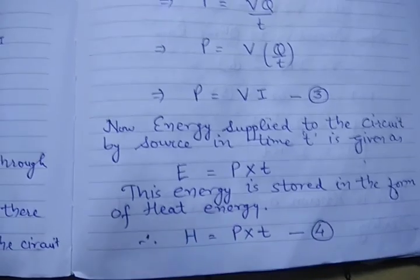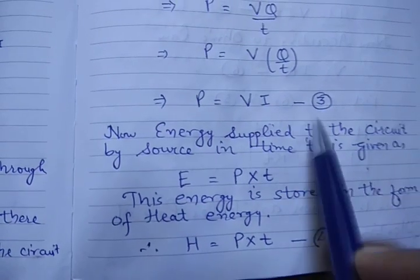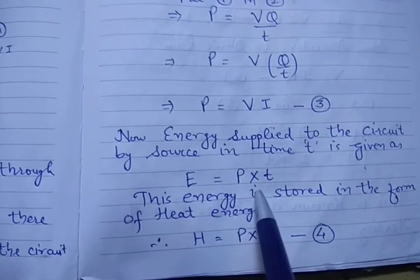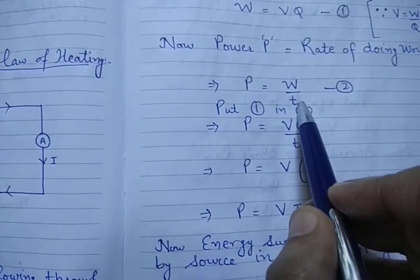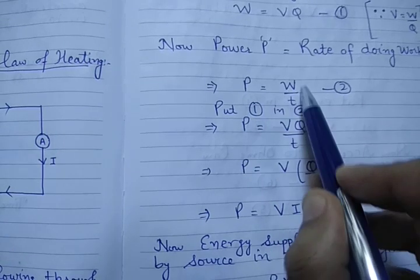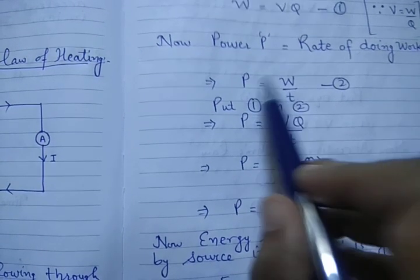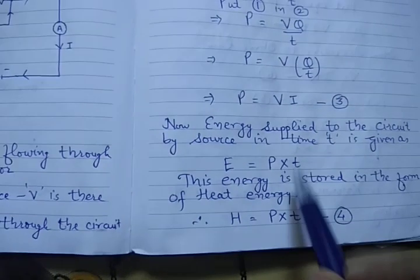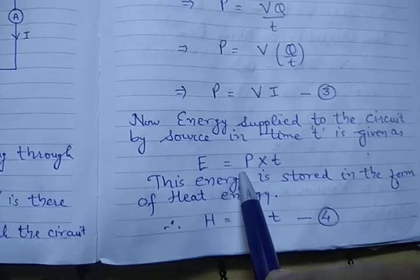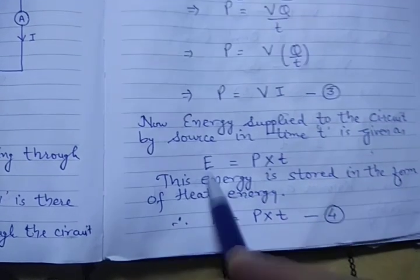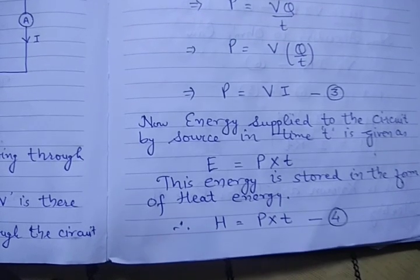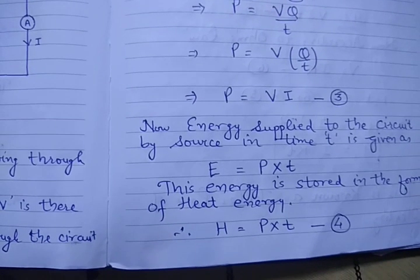Now energy supplied to the circuit by the source in time T is given by E equals power into time. How is this equation there? Because we know that power equals work done by time. Now work done is stored in the form of energy, so energy will be equal to power into time. So this energy is stored in the form of heat energy in the circuit. Therefore, let it be H. H is heat energy, so H equals power into time. Let this be equation number 4.